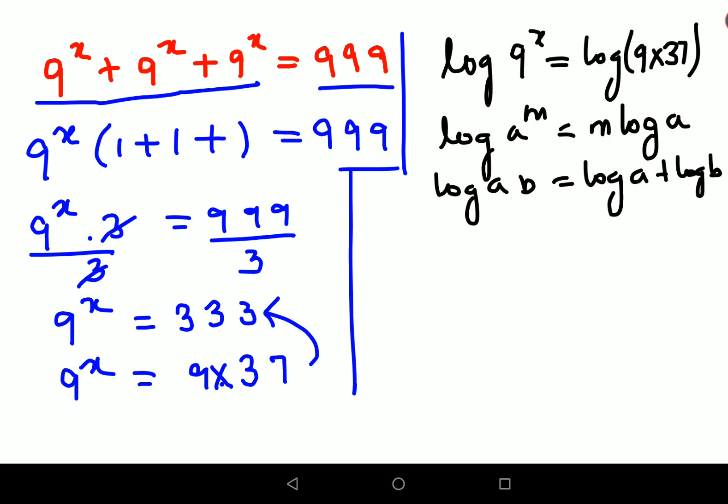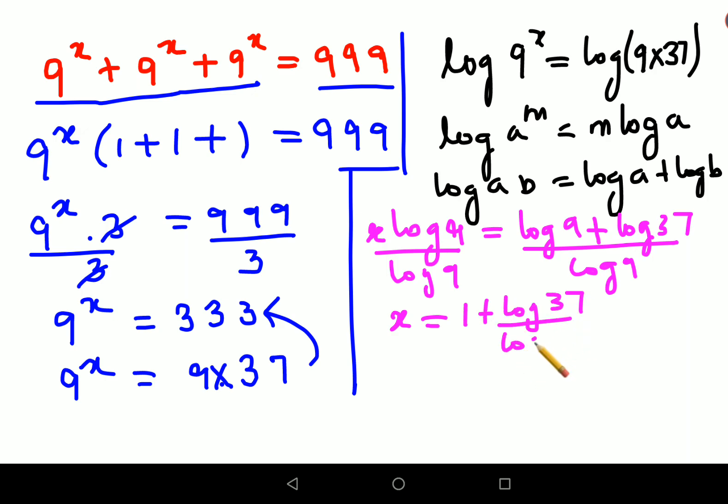So using the same logic, what we can do is write x log 9 equals to log 9 plus log 37. Dividing both sides by log 9, you get the answer of x as 1 plus log 37 upon log 9.